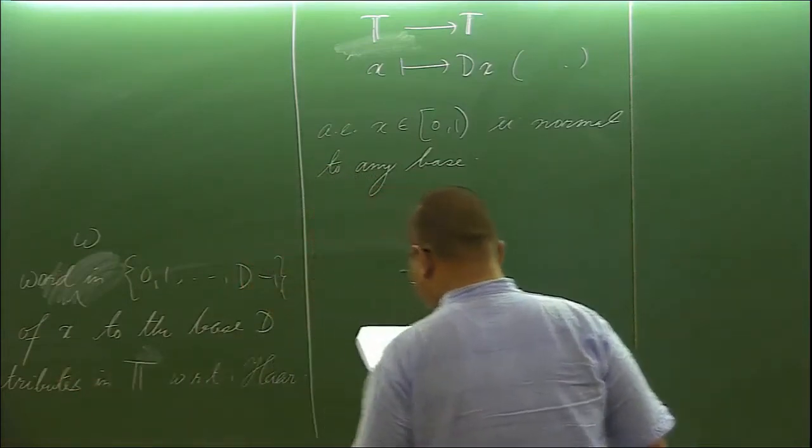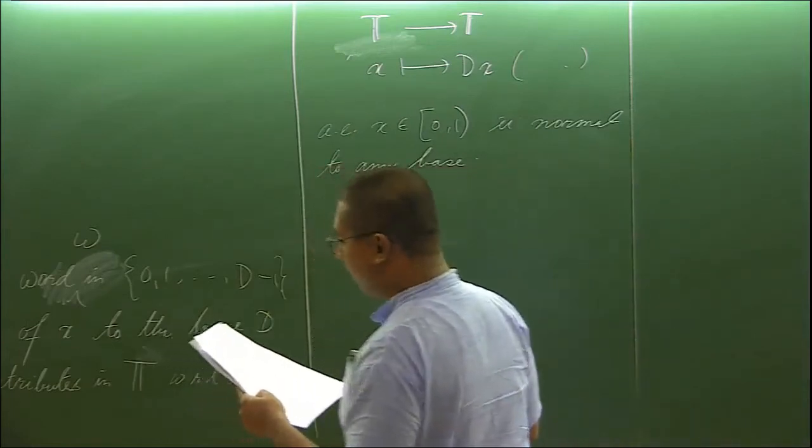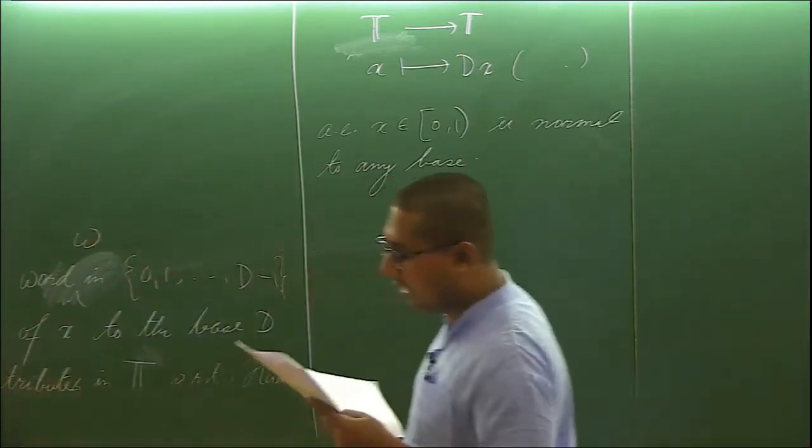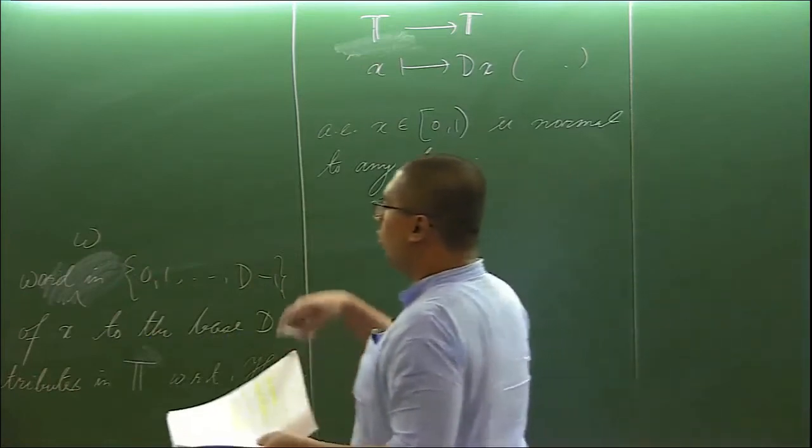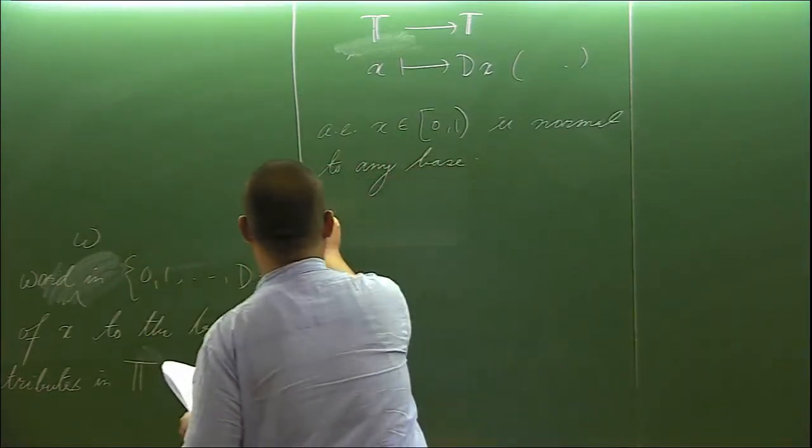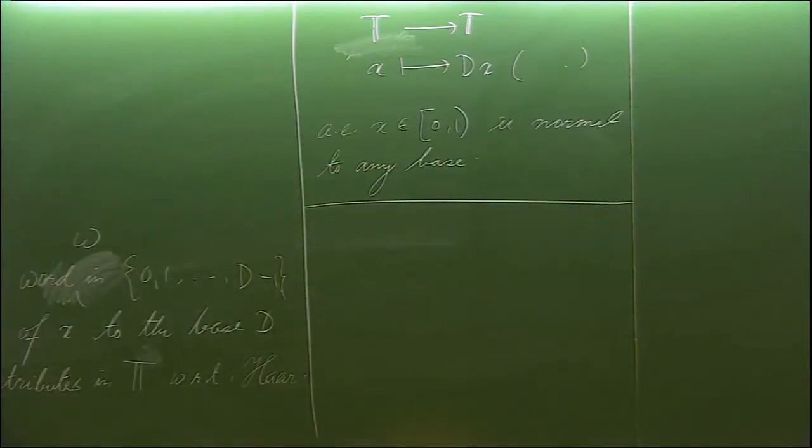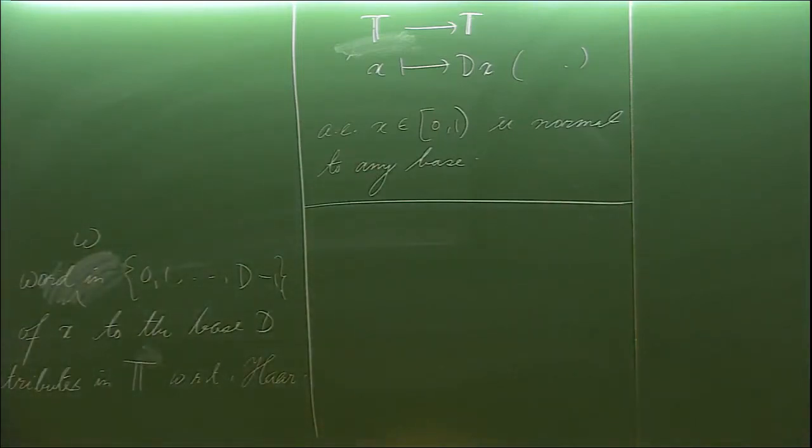It was proved by Broderick, Fishman, Kleinbock, Reich and Weiss that the set of real numbers which are not normal to any base, the set is hyperplane absolutely winning and therefore has full Hausdorff dimension. But in this talk we are not getting into that, rather we are interested in measure theoretic questions.